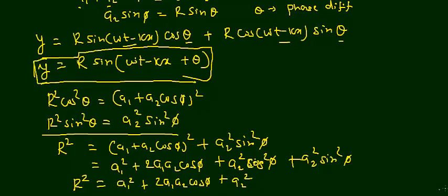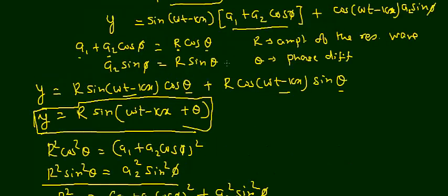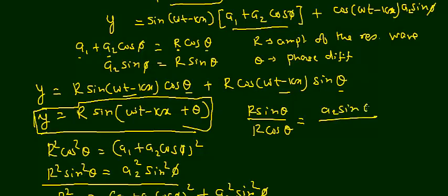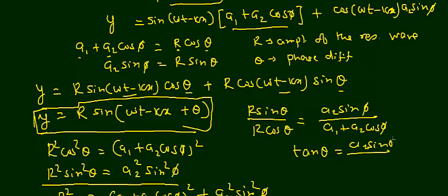Now I can find θ by taking the ratio: r sin θ / r cos θ = a₂ sin φ / (a₁ + a₂ cos φ), which gives tan θ = a₂ sin φ / (a₁ + a₂ cos φ). Since I know a₁, a₂, and φ, I can find tan θ and from that determine θ. Putting both r and θ into the resultant equation gives the complete equation for the resultant wave.